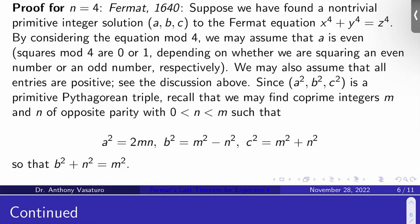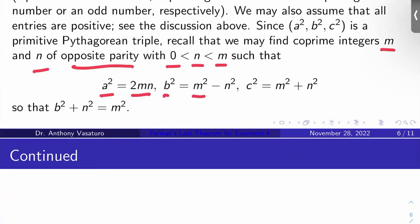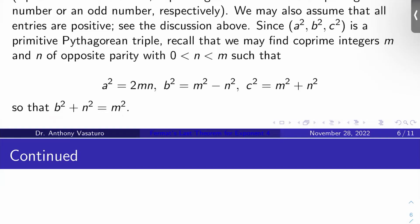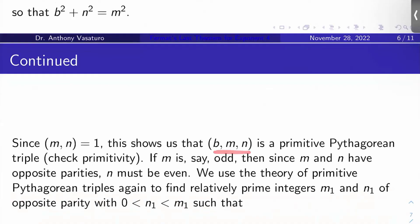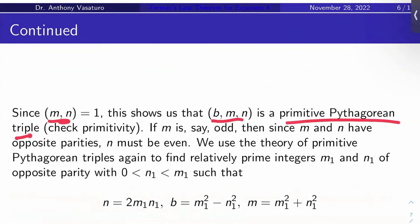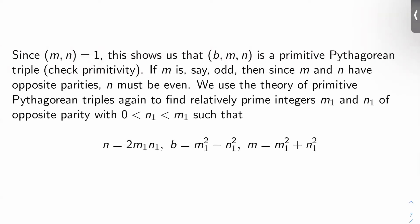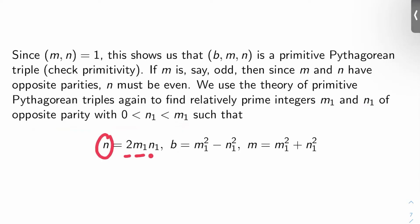By the classification of primitive Pythagorean triples, we can find co-prime integers m and n of opposite parity with 0 < n < m such that a² = 2mn, b² = m² - n², and c² = m² + n². Rearranging the middle equation gives b² + n² = m², so bmn is another solution to the Fermat equation with exponent 2. Since m and n are co-prime, bmn is actually a primitive Pythagorean triple. Now m is either even or odd; we'll dispense with m even later. Assuming m is odd, since m and n have opposite parity, n must be even. Applying the theory of primitive Pythagorean triples again to bmn, we find co-prime integers m1 and n1 of opposite parity with 0 < n1 < m1 such that n = 2m1n1, b = m1² - n1², and m = m1² + n1².